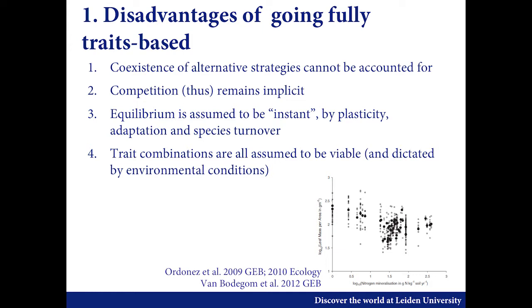There are also major disadvantages. The main one is that we predict one trait combination at a given pixel because of the trait-environment relationships. As Ian also introduced today, the variation at a given location is much larger than the variation in global-scale means. So if we do this type of approach, we kind of neglect all the major coexistence of alternative or complementary strategies, because it does not allow us to account for those — there's no competition in there, it's simply which trait mean you will get out of the system.